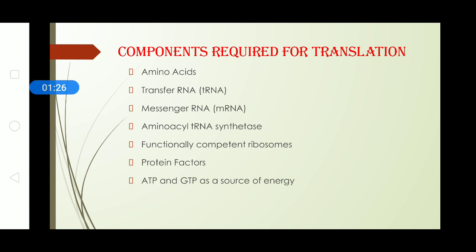Basically, to accomplish or comprise any process, we need some materials or some things by which we can achieve our objective. Similarly, for translation, several components which are required are amino acids, the transfer RNA or also known as tRNA, the messenger RNA which is shortly known as mRNA.